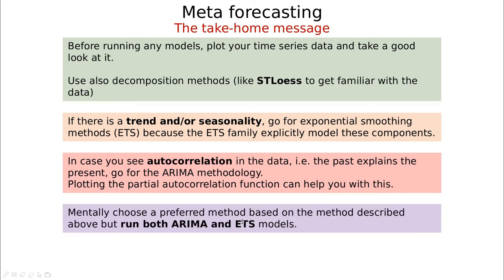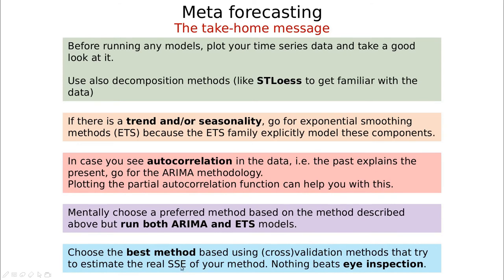Another important piece of advice: run both models, don't just stick to ARIMA or ETS. Compare them using quantitative measures like mean square error or maximum absolute error if you're interested in outliers. Nothing beats visual inspection either. If by inspection ARIMA is not capturing things well and ETS is working better, it's probably because you have multiplicative noise. The idea of comparing models is not a competition — it's learning from the data. If ARIMA beats ETS, correlations are the most important ingredient. If ETS beats ARIMA, multiplicative noise is important or the trend cannot be captured with differencing.